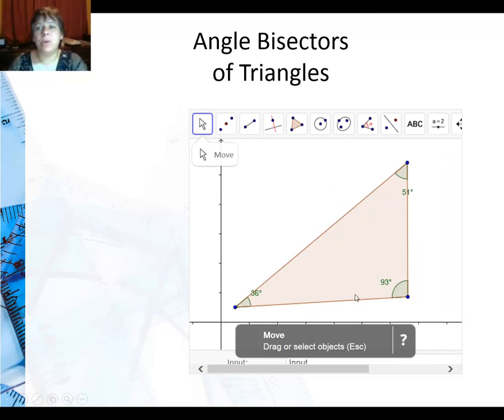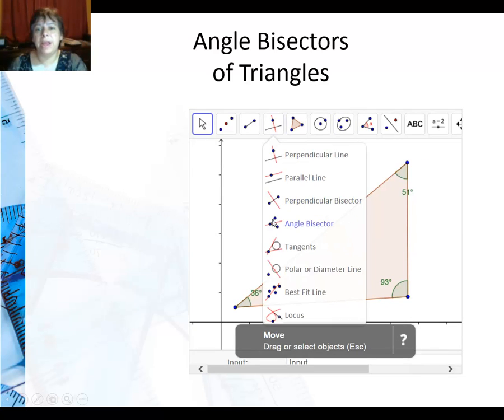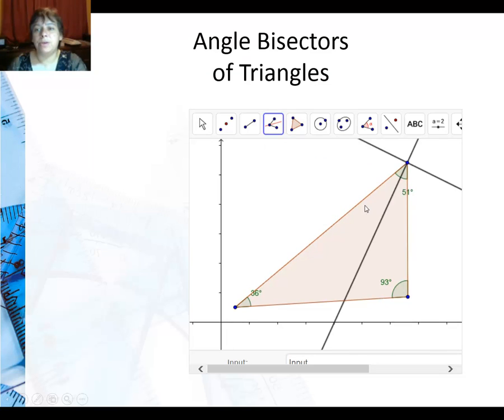So let's take a look at what angle bisectors look like. I can actually go ahead and say angle bisector. And if I click on two lines, you can see there's a bisector, here's another bisector, and finally the last angle bisector.